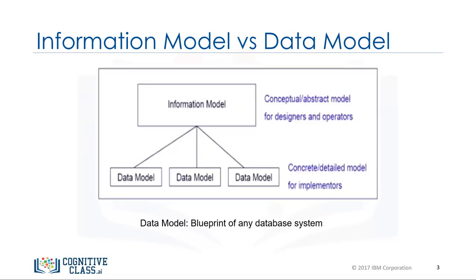This figure illustrates the relationship between an information model and a data model. An information model is an abstract formal representation of entities that includes their properties, relationships, and the operations that can be performed on them. The entities being modeled can be from the real world, such as a library.